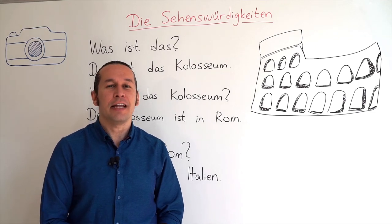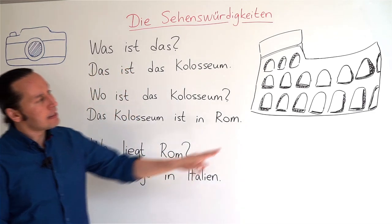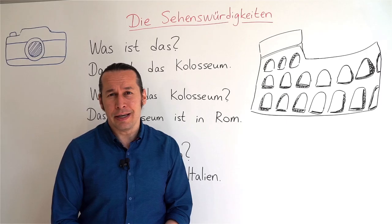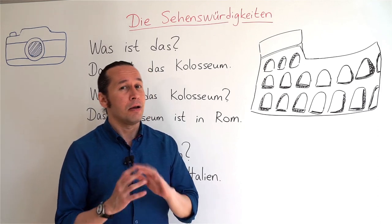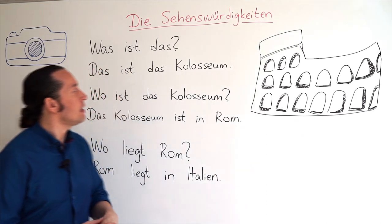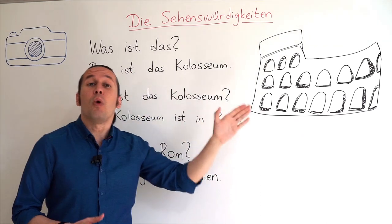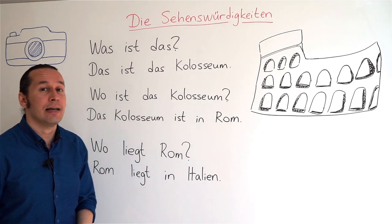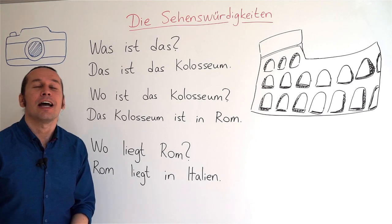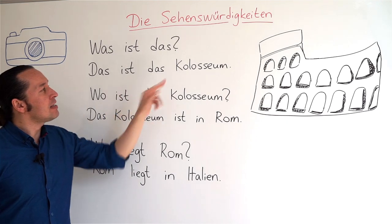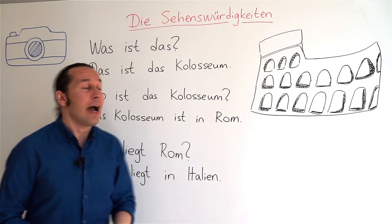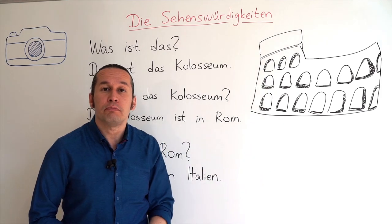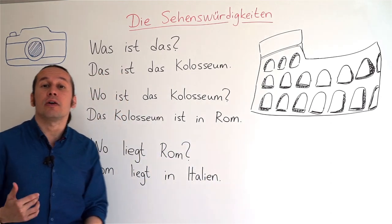Let's continue with the next landmark. I tried to draw the Colosseum, which is in Rome, in Italy — it's a nice place. So if I ask 'what is this?' — was ist das? — and the answer: this is the Colosseum — das ist das Colosseum.